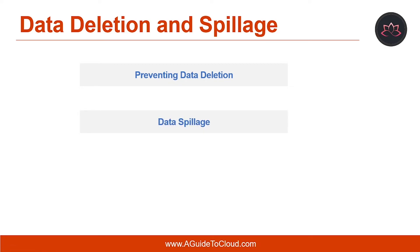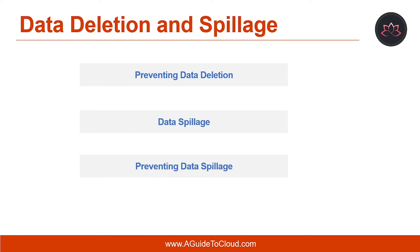Data spillage occurs when protected data is transferred to a system that doesn't provide the same level of protection as the source — for example, sensitive data in your tenant spilling outside the boundaries of your control. This can be caused by both malicious and non-malicious behavior. One of the most effective methods for preventing data spillage is implementing a solution such as Azure Information Protection Policies, which can classify, protect, and monitor the life cycle of documents and files. Documents containing regular expressions like credit card numbers and social security numbers can be protected using data loss prevention policies.